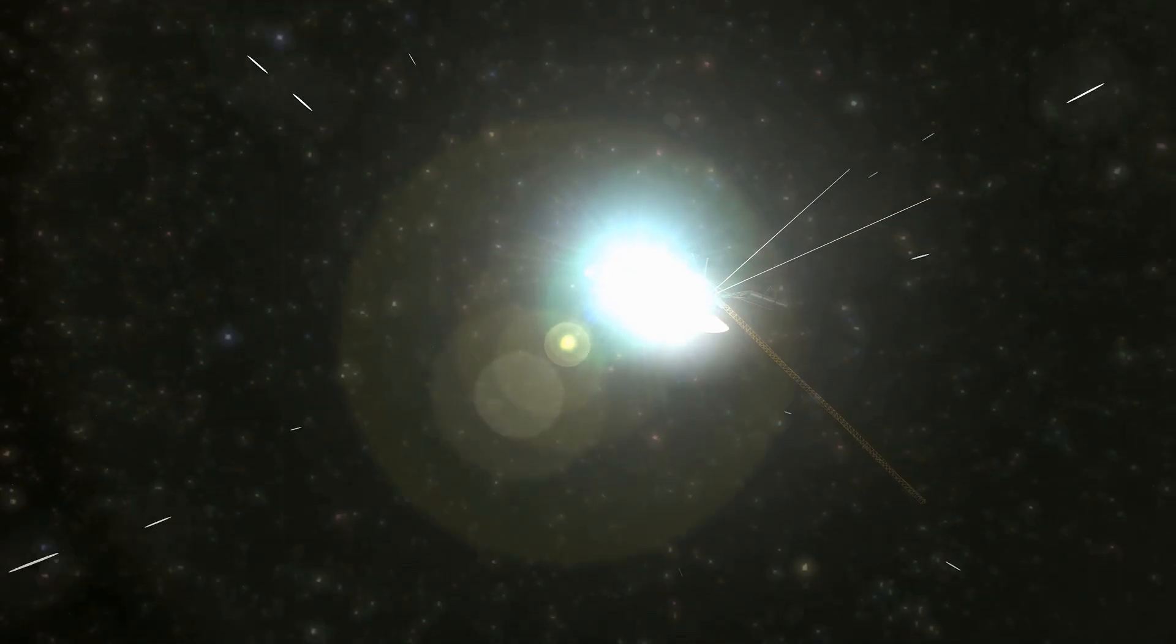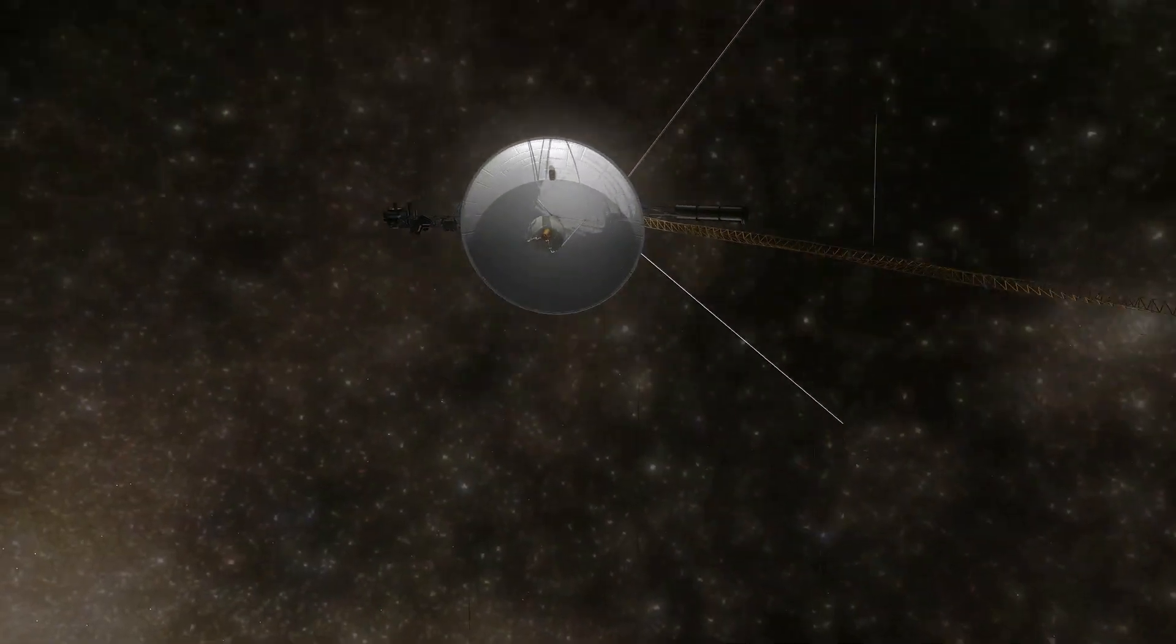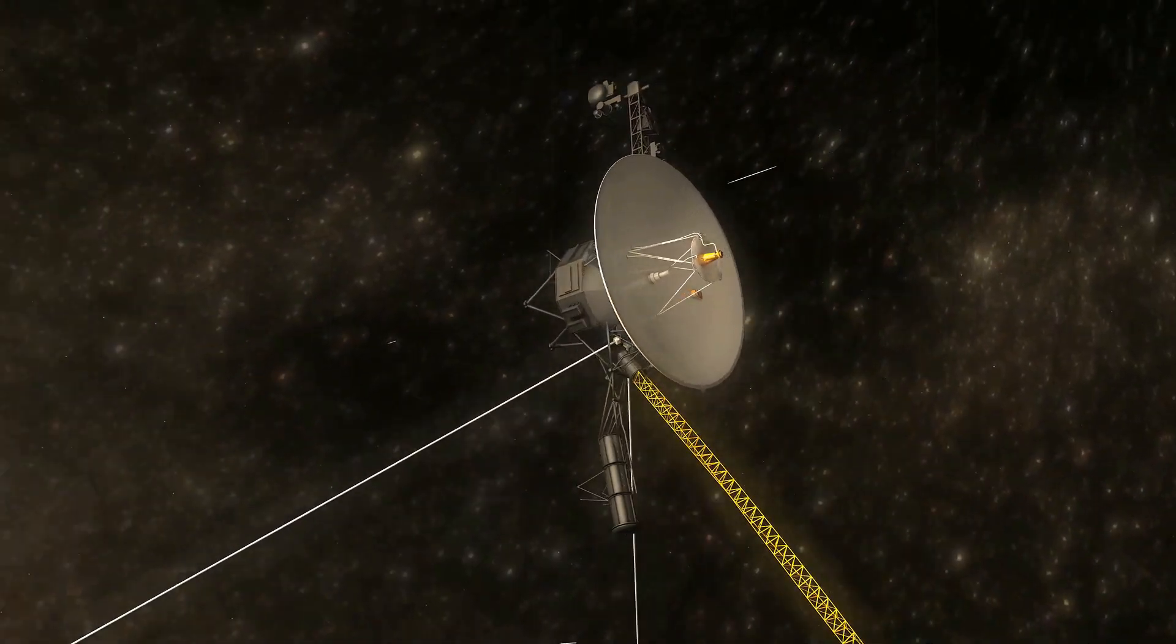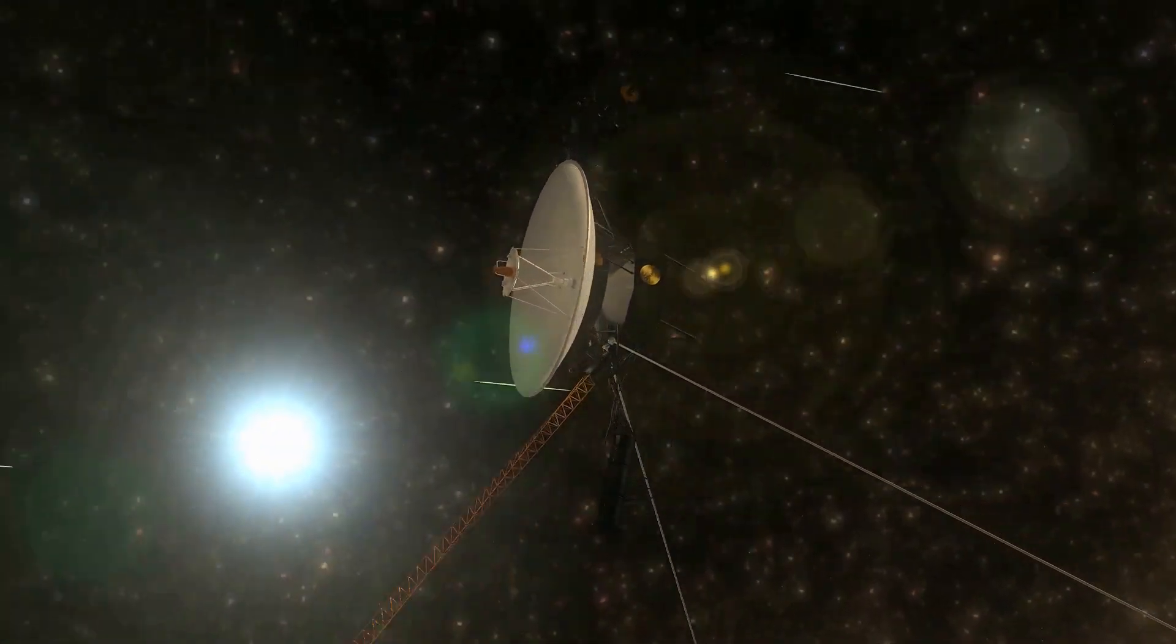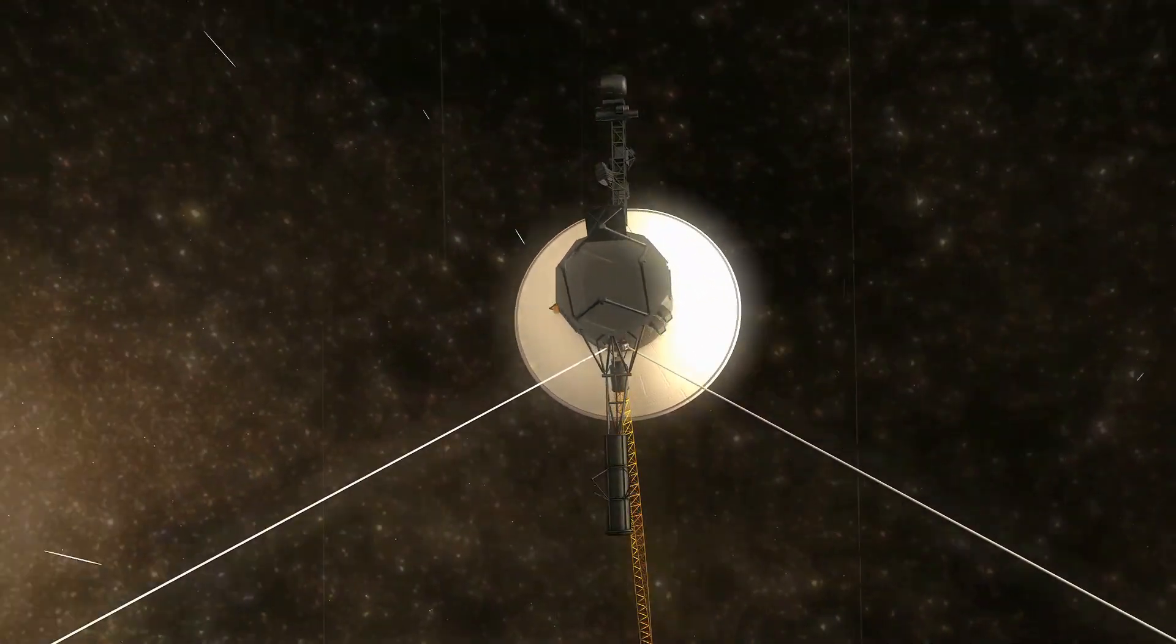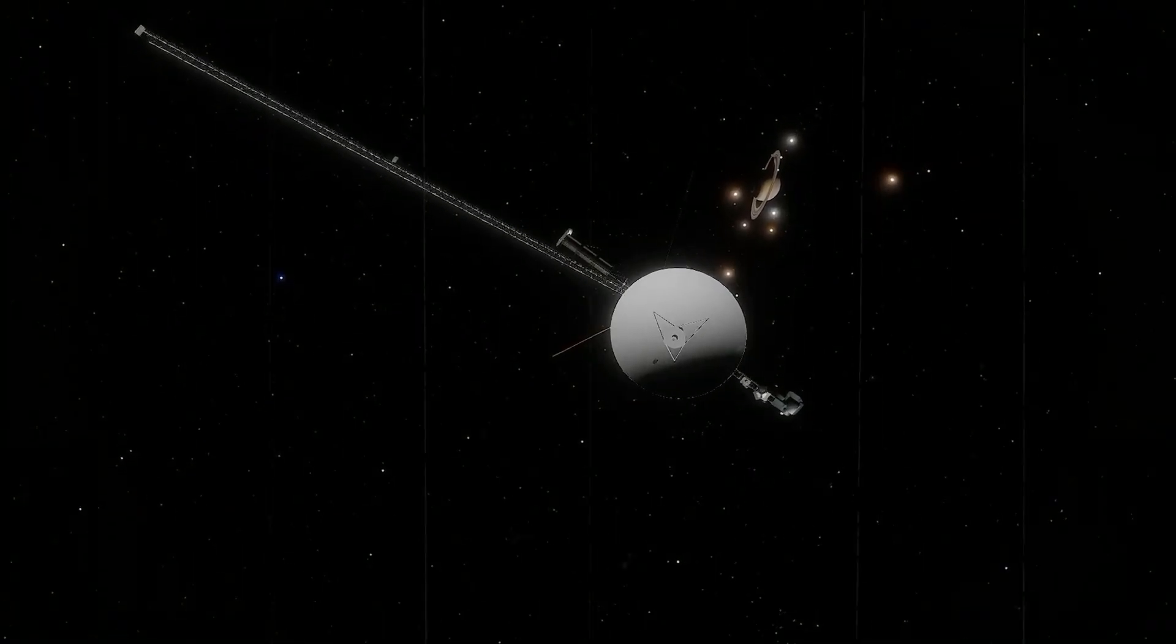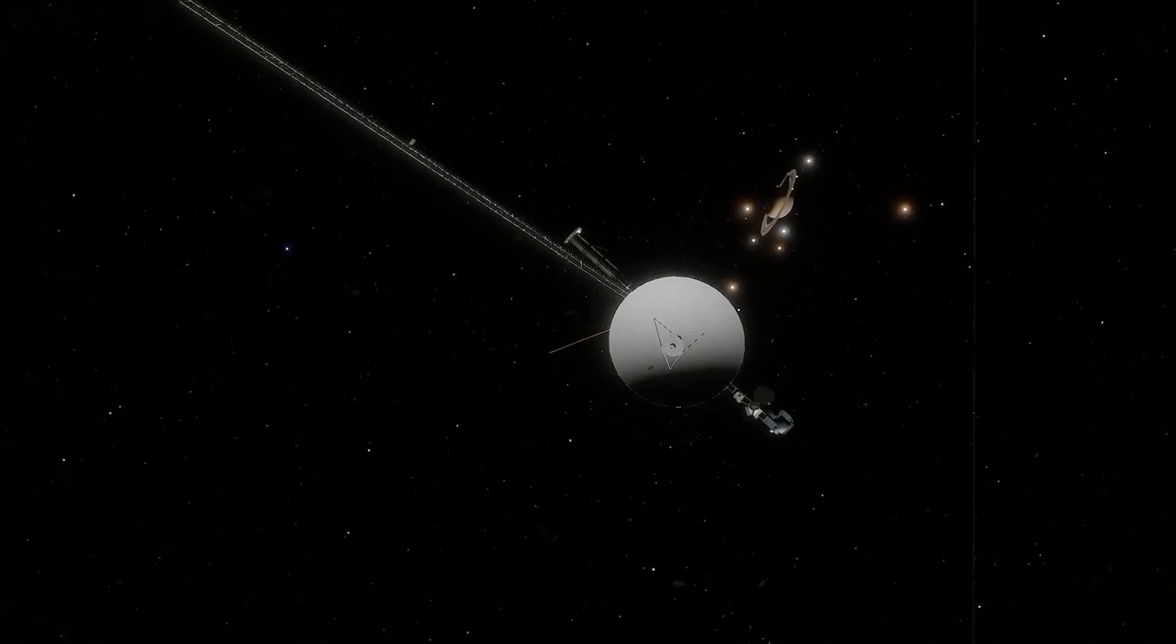Voyager's contribution may prove to be the most important not because it gave us a complete picture, but because it forced us to look. The signals it sent are a nudge, a whisper, reminding us that the universe is stranger than our instruments can yet chart. Perhaps the true value of Voyager's million-light-year structure lies not in the structure itself but in what it symbolises. The next frontier of discovery, the next leap in our understanding of the cosmos.